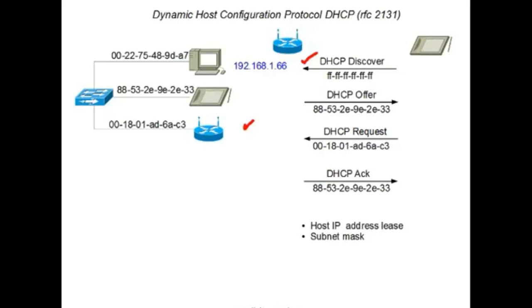During the DHCP exchange, a subnet mask is also passed to the tablet, so the host receiving the address knows which addresses can be reached on the local area network via ethernet and can update the ARP table so those devices can be addressed directly, and which ones need to go through the default gateway. A host name can also be exchanged as part of this, which means when you add a device to your home network, you can assign a name to that device populated in the router's tables, saving a lot in system administration. The DHCP server address is discovered as well as the default IP gateway.